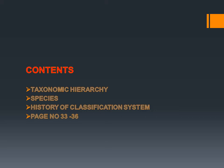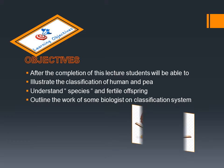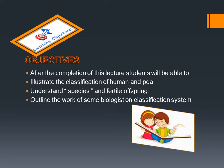After the completion of this lecture, students will be able to illustrate the classification of human and pea. They will be able to understand about species and fertile offspring, and they will be able to outline the work of some biologists on the classification system.